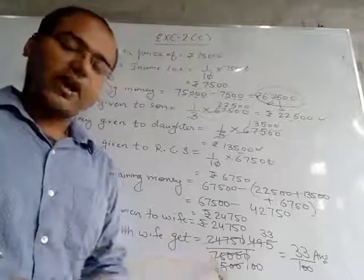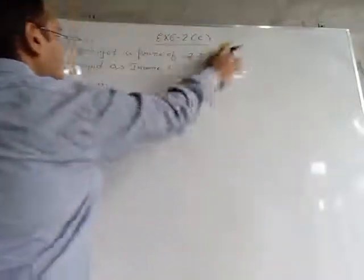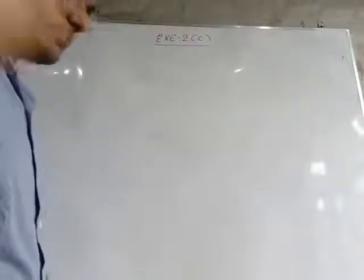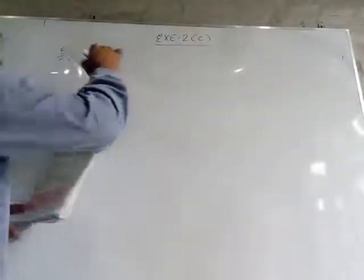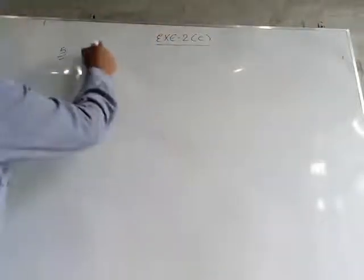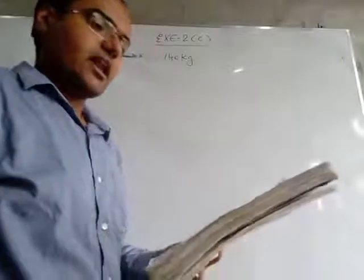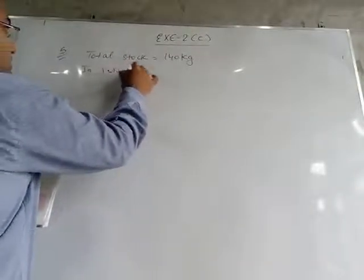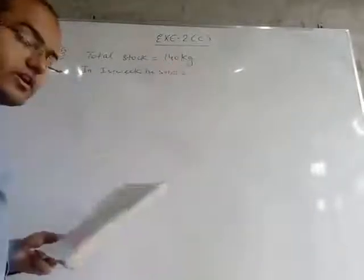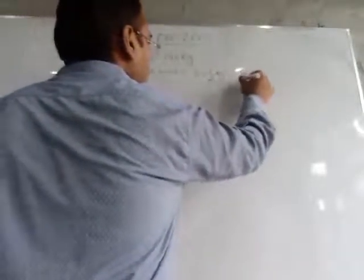Now see question number 5. A shopkeeper has a stock of 140 kg of wheat. First we write the total stock as 140 kg. In the first week he sold 24½ kg, which as an improper fraction is 41/2 kg.